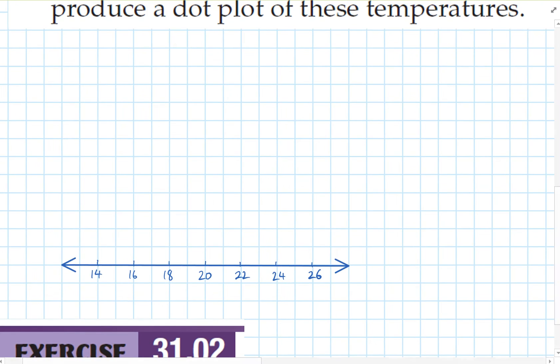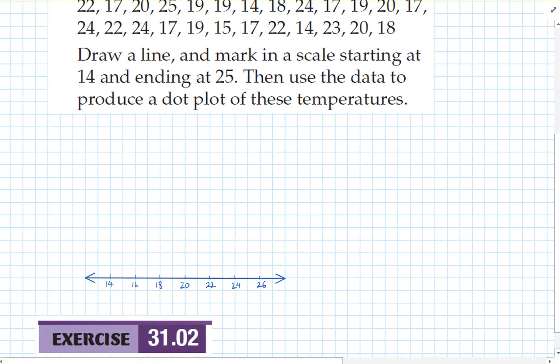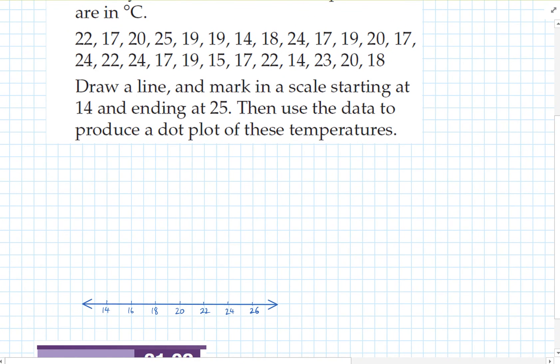Okay, so there's my scale put in, and now we want to mark off these temperatures. What we'll do for each temperature that we come across is make a dot above that. So I'll make my first dot about halfway up there and we'll cross it off. Next one's 17, so we'll put that dot in.